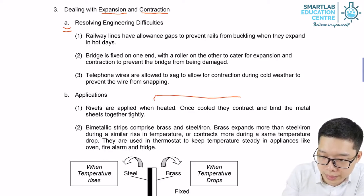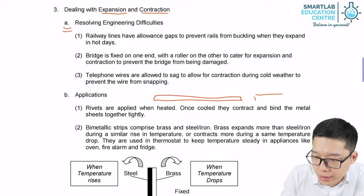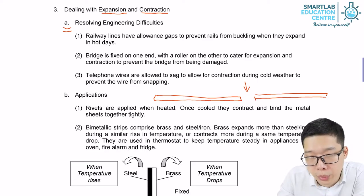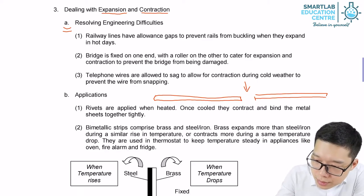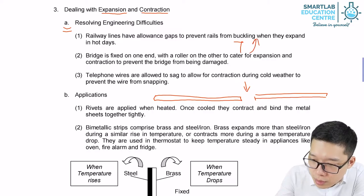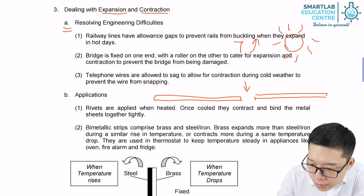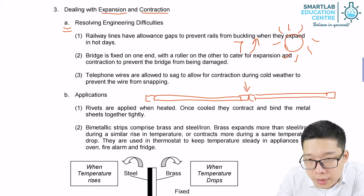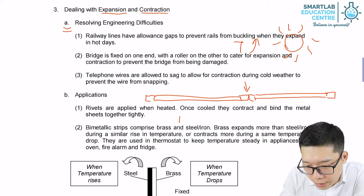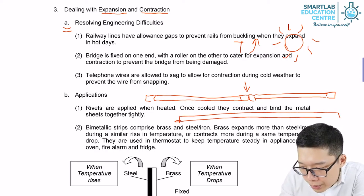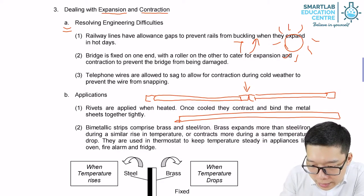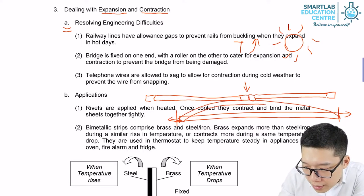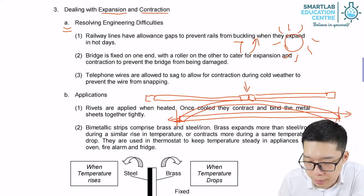First example: railway. Railways are made of solid metal and we leave a gap in between the two parts of railways. When heat is absorbed — sun overhead — the railway will expand, and the gap allows them to expand. If we build a single railway without gaps, when heat is absorbed it tends to expand, so the whole railway may bend up and endanger the life of the passengers.